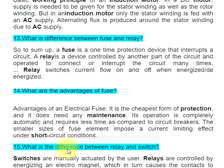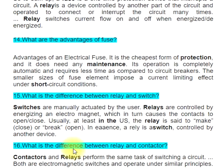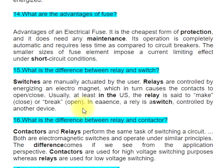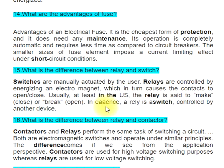Question 15: What is the difference between a relay and a switch? Switches are manually actuated by the user. Relays are controlled by energizing an electromagnet, which in turn causes the contacts to open or close. Usually, in the US, the relay is said to 'make' (close) or 'break' (open). In essence, a relay is a switch controlled by another device.